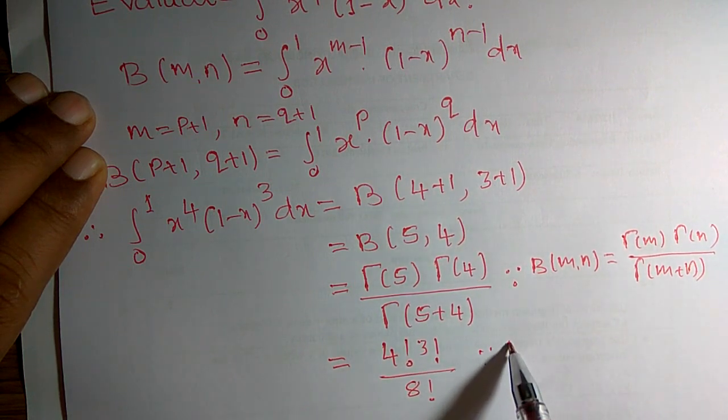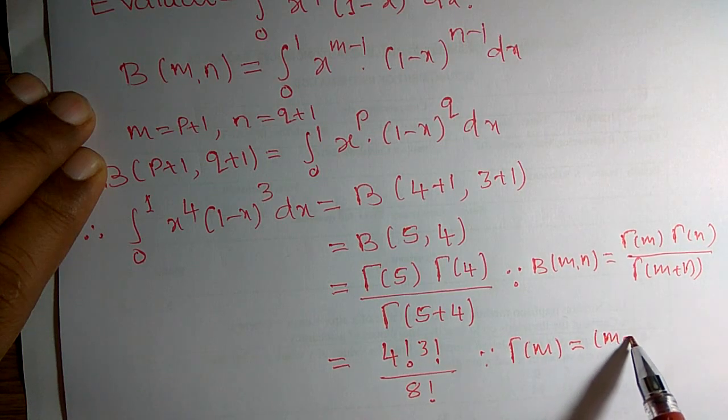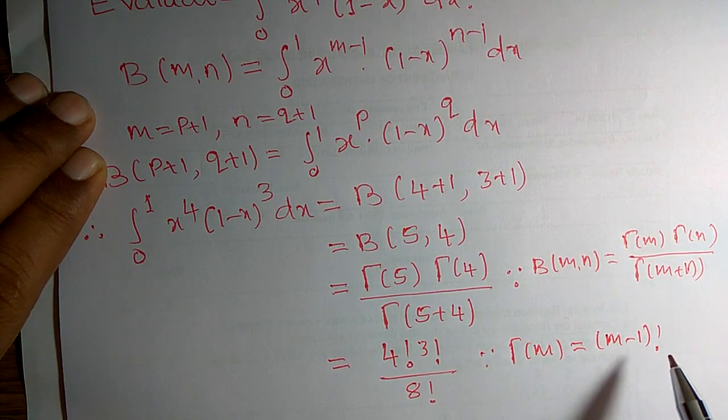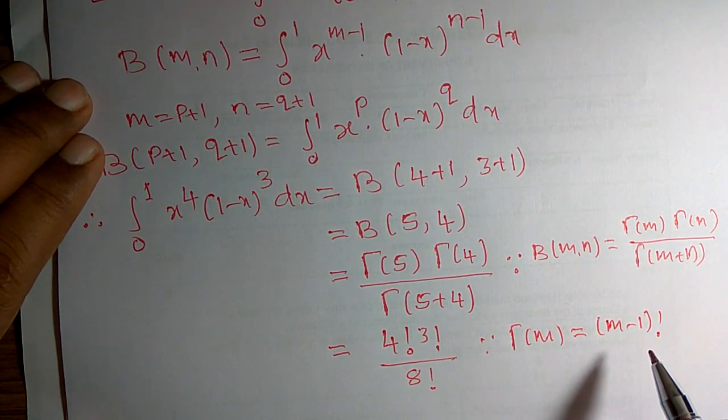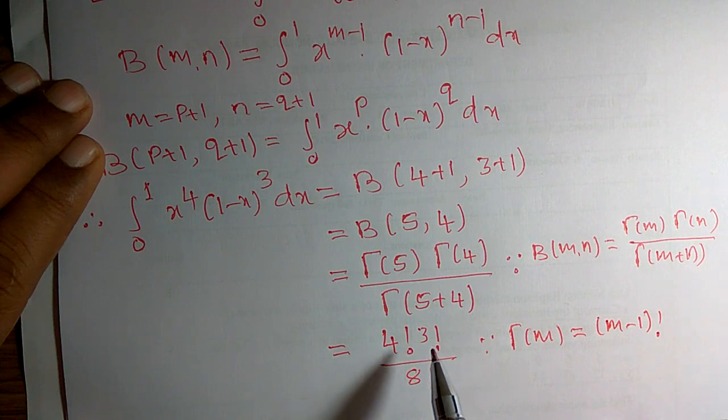What is the reason? Gamma of m can be written as m minus 1 factorial. I hope 4 factorial can be written as 4 into 3 into 2 into 1. Similarly, 3 factorial is 3 into 2 into 1.